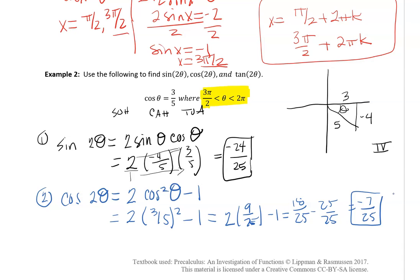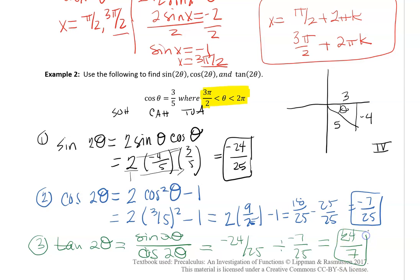Now for tangent 2θ, you notice that we didn't do any double angle formulas up above for tangent 2θ. But I do know that tangent is equal to sine of 2θ over cosine of 2θ. So if I take part 1, which is negative 24/25, and divide it by part 2, which is negative 7/25, and I keep it, change it, flip it, or multiply by its reciprocal, I end up with 24/7. So I really didn't need a double angle formula for tangent, but I did have to go back to that handy knowledge of working with sine over cosine.